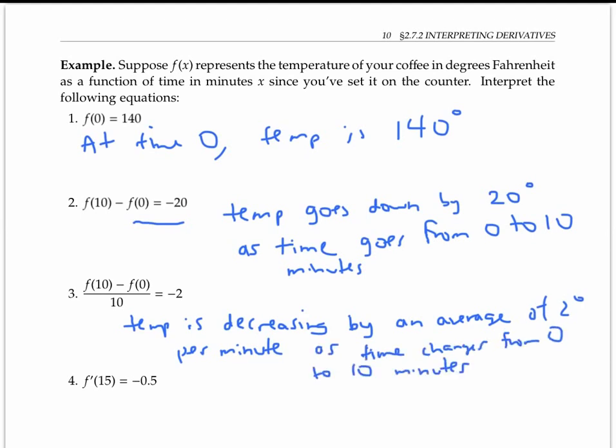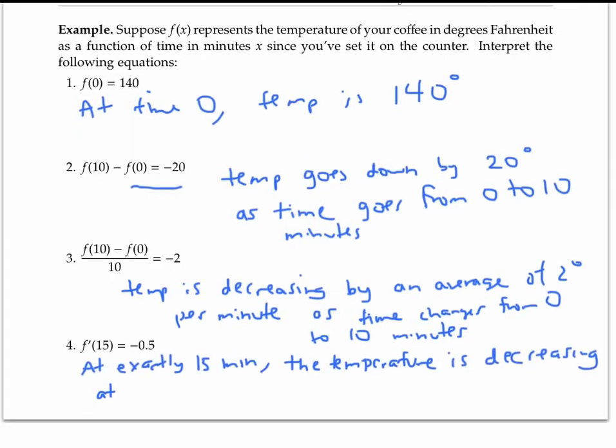Finally, the derivative of f at 15 is negative 0.5 means that at exactly 15 minutes, the temperature is decreasing at a rate of 0.5 degrees per minute. Negative numbers here always mean decreasing, and f prime is an instantaneous rate of change.